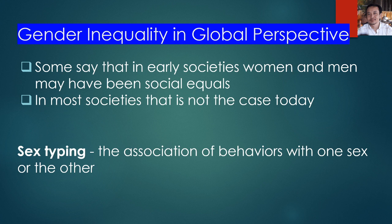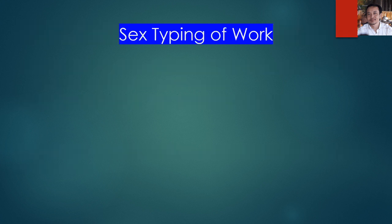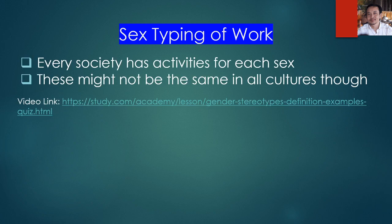Let's take a brief overview of these inequalities. First, sex typing — the association of behaviors with one sex or the other. Anthropologist George Murdock in 1937 surveyed 334 pre-modern societies around the world and found that in all of them, activity was sex-typed.